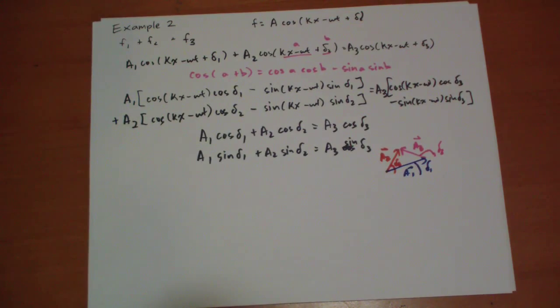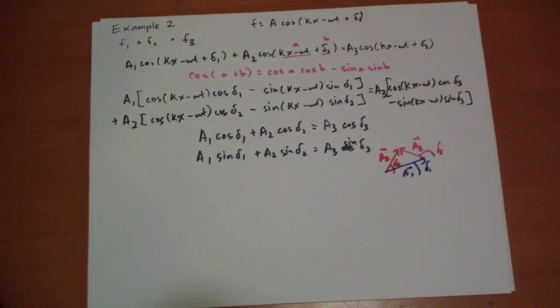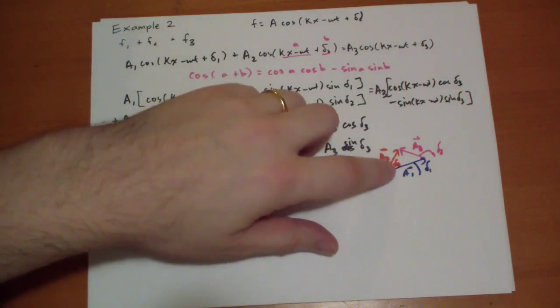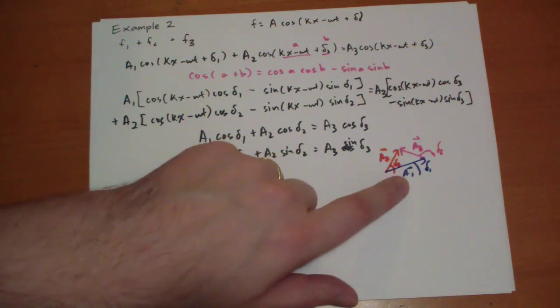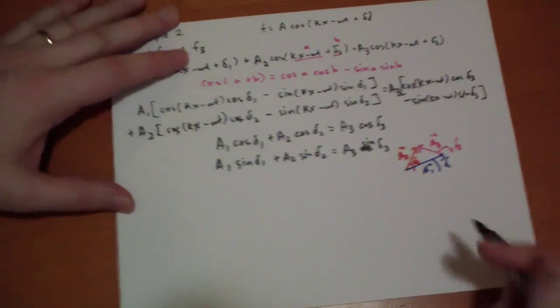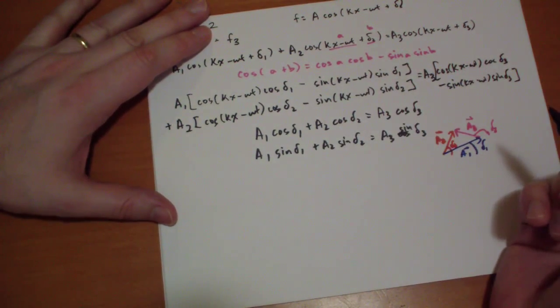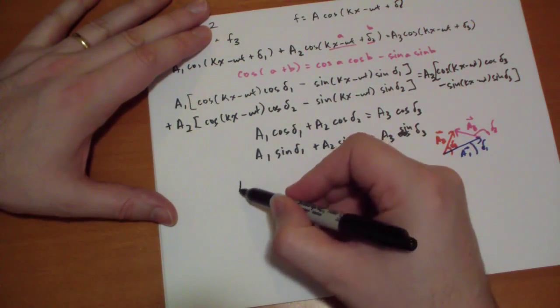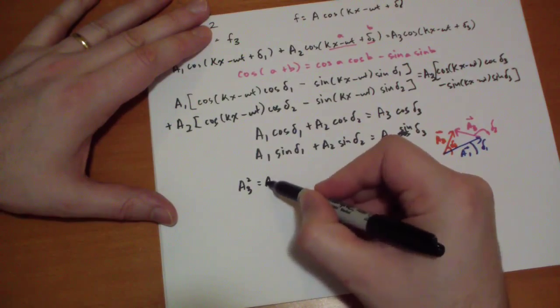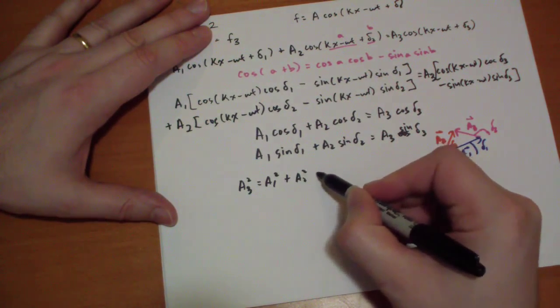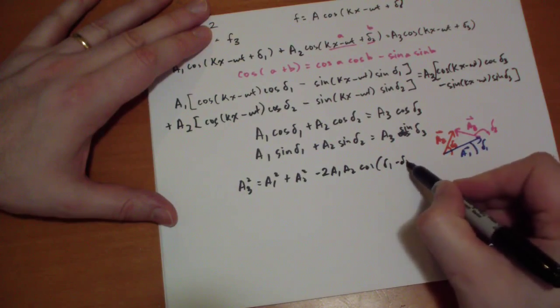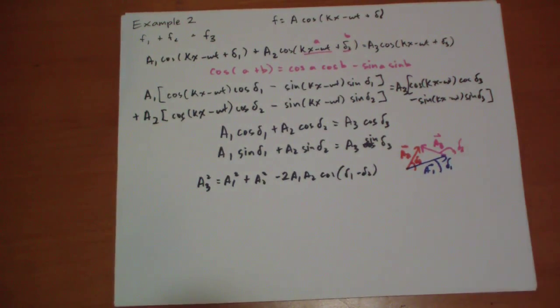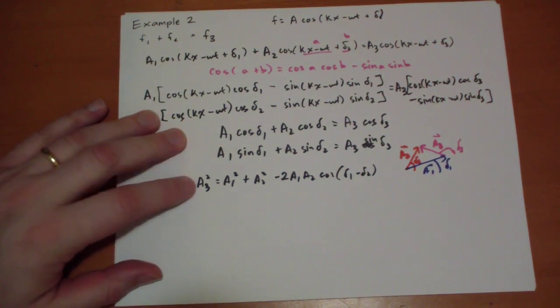It's not at all obvious how to find the magnitude and the angle of a vector given the other two vectors. But if you look at it geometrically you can see that you can use the law of cosines where this angle between A1 and A2 is just equal to delta 2 minus delta 1. So A3 squared is equal to A1 squared plus A2 squared minus 2A1 A2 cosine of delta 1 minus delta 2, and if you got it backwards it doesn't matter, cosine's even so it'll work out.